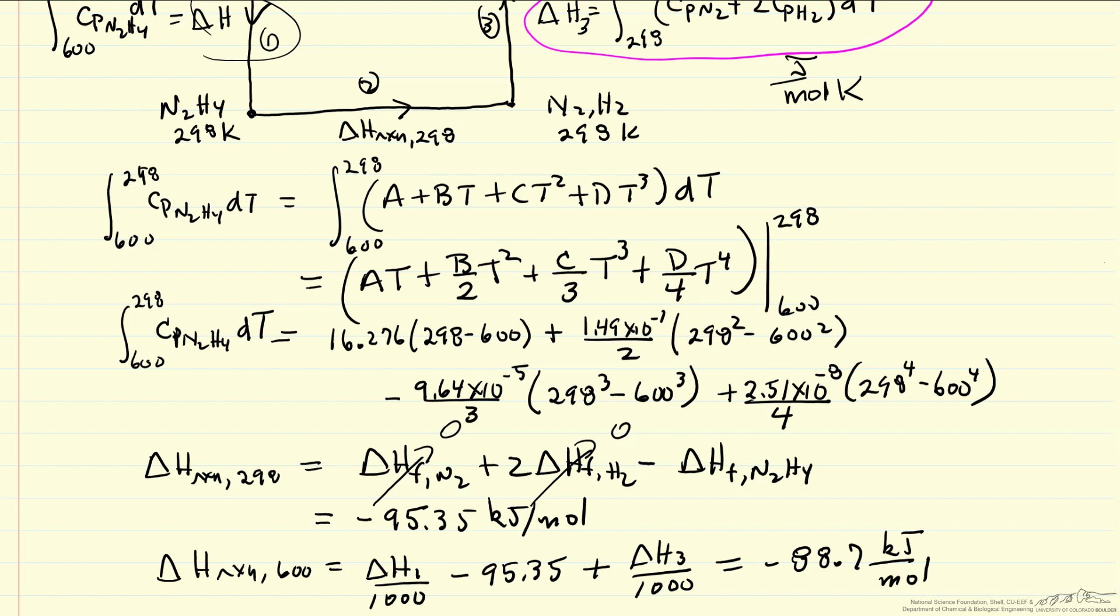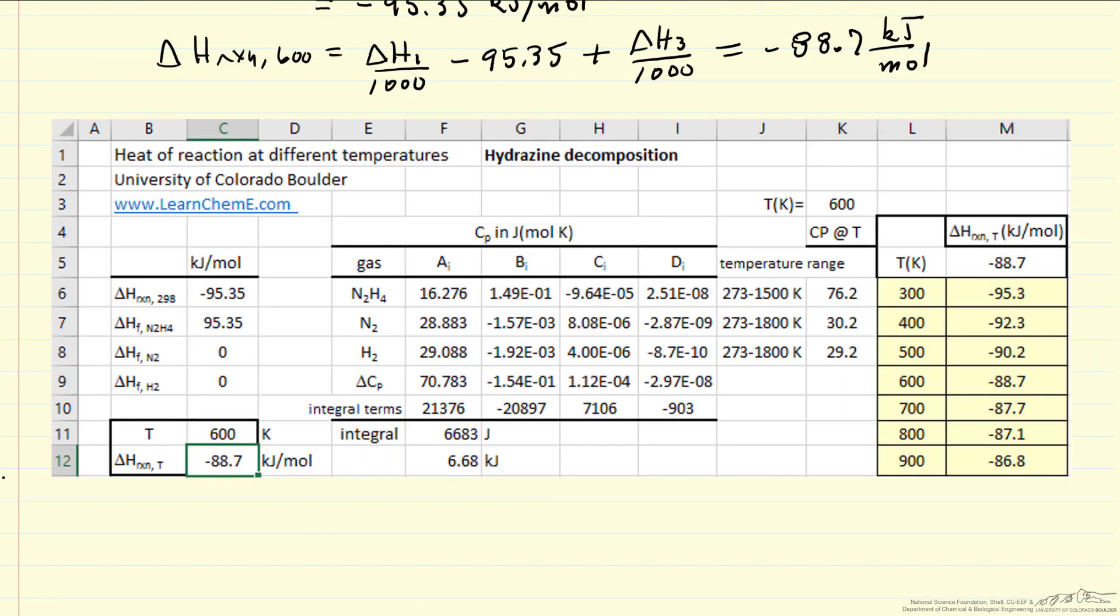And let me just show you briefly the spreadsheet. So I put in the heat capacity, the delta heat capacity is just products times their stoichiometric coefficients, which are positive, minus reactants and their stoichiometric coefficients, and integrating.